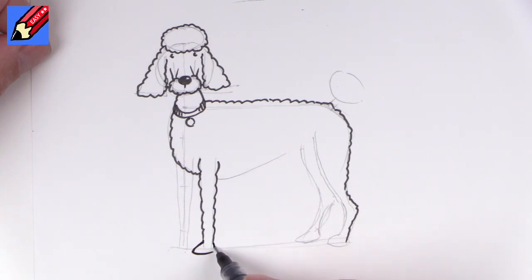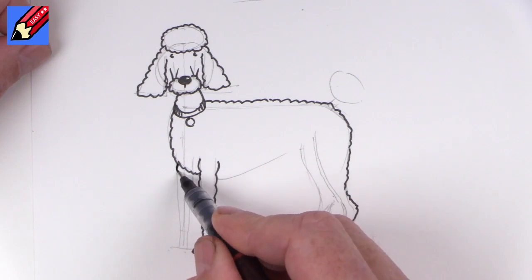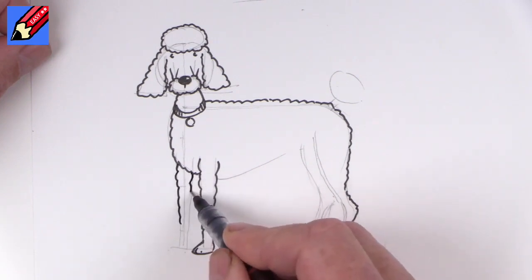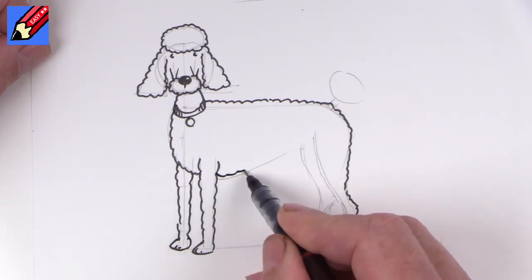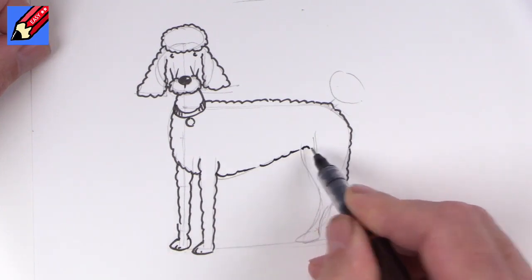And then we're going to want to have the paw at the end of the leg. Similarly here we'll have the leg coming down and a paw. And we can bring that stomach all the way up there.